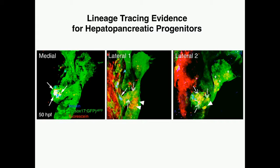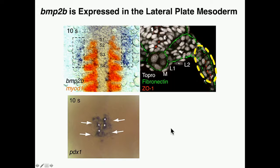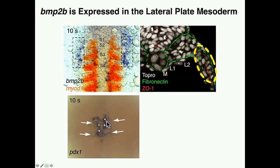We then asked what signaling molecule regulates the fate of these progenitor cells. We performed expression analysis of different signaling molecules and found that BMP2B, at the ten somite stage embryo, is expressed in the lateral plate mesoderm right next to the bipotential progenitor cell. Very interestingly, BMP2B expression showed a reciprocal pattern compared to PTX1 — a well-known pancreatic determination gene — with BMP2B more laterally expressed and PTX1 more medially expressed.